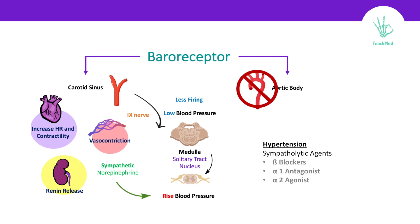For example, beta blockers, alpha-1 antagonists, and alpha-2 agonists. And we will talk about each one of them separately. So let's get started.